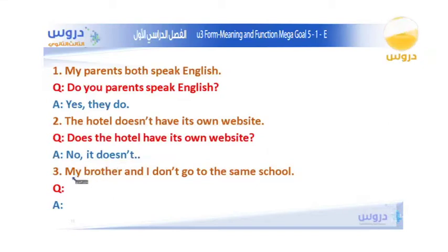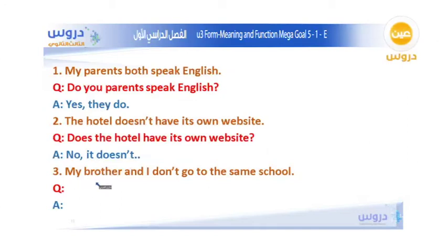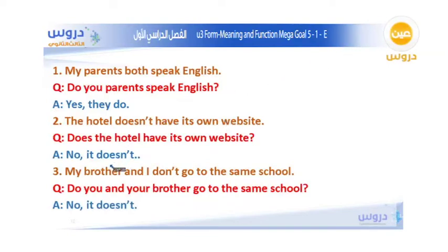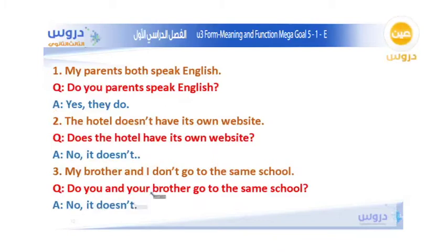The third statement: My brother and I don't go to the same school. We use do because we're talking about two people — plural. Since it's a negative statement, the answer is no. The question is: Do you and your brother go to the same school? — No, we do not.